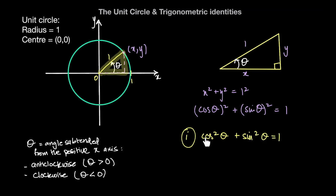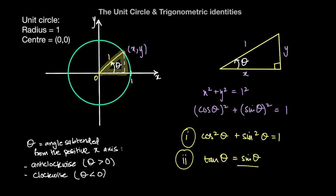This gives us one of the trigonometric identities we'll be using throughout this entire trigonometry syllabus. The second trigonometric identity we derived is that tan(θ) equals sine(θ) divided by cosine(θ). These are the two trigonometric identities we'll be using over this math course.